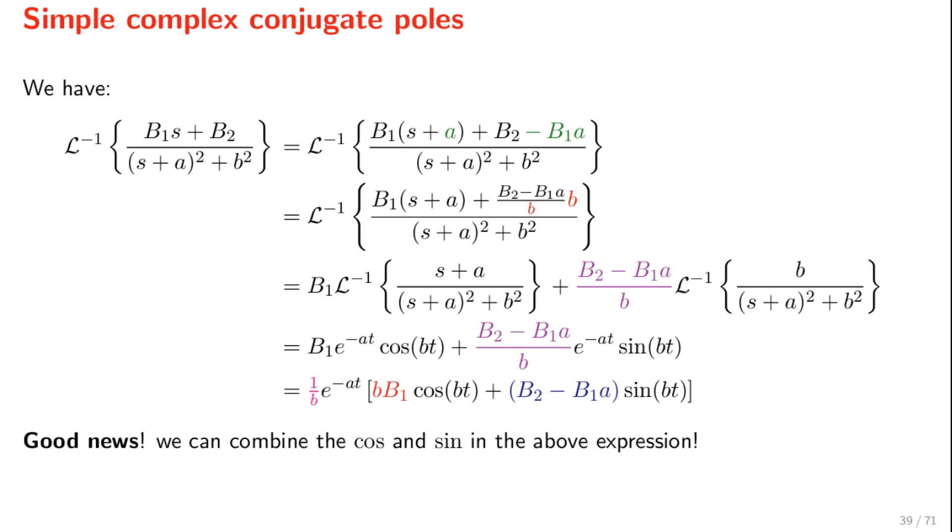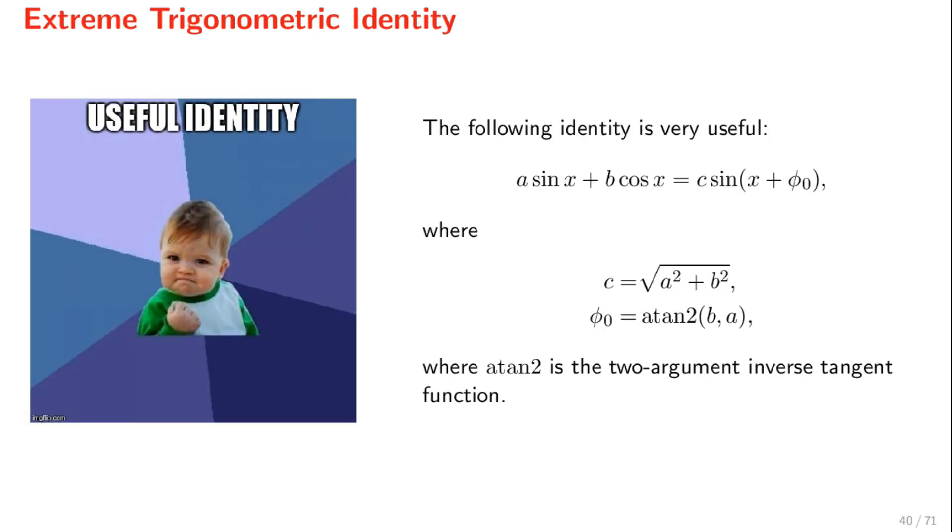The good news is that there is a way to simplify this even further. We can in fact combine the cosine and sine functions into a single sine. We can use this extremely useful trigonometric identity, according to which a linear combination of a sine and a cosine can be written as a single sine, with c and phi zero given by these formulas.